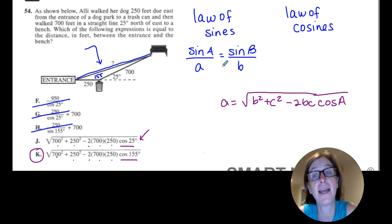So law of sines: sine A over a equals sine B over b. Law of cosines: a equals the square root of b squared plus c squared minus 2bc cosine of A.